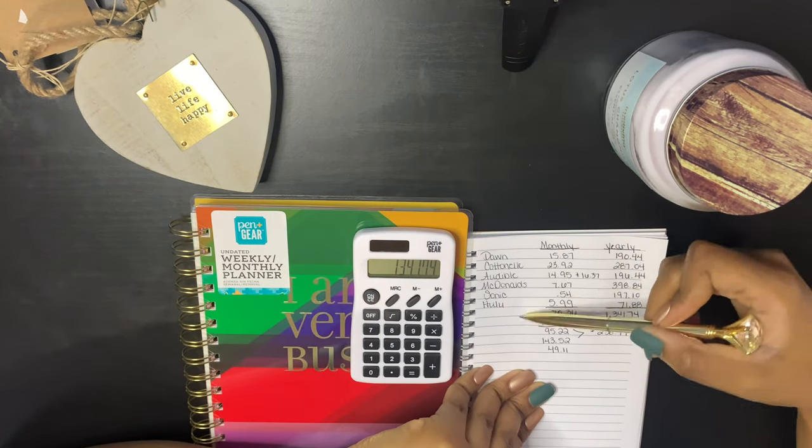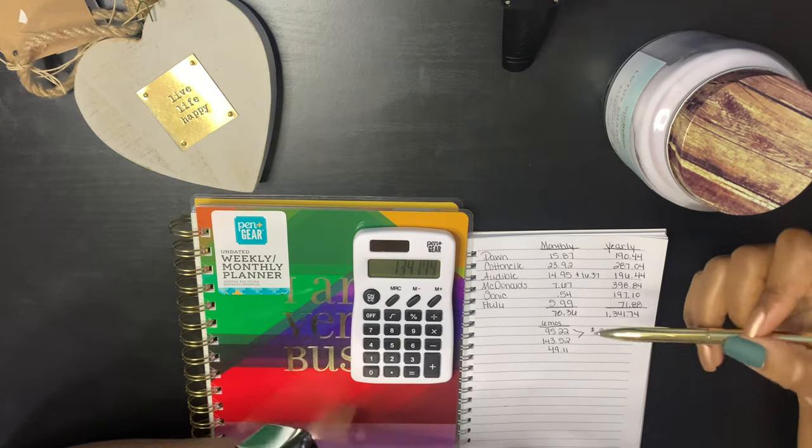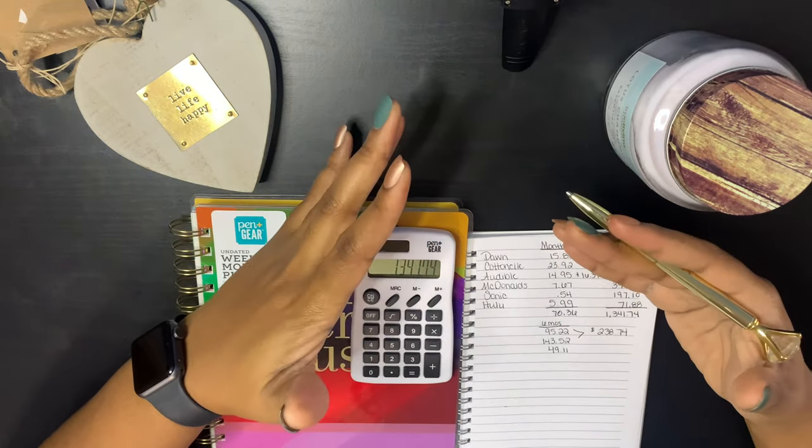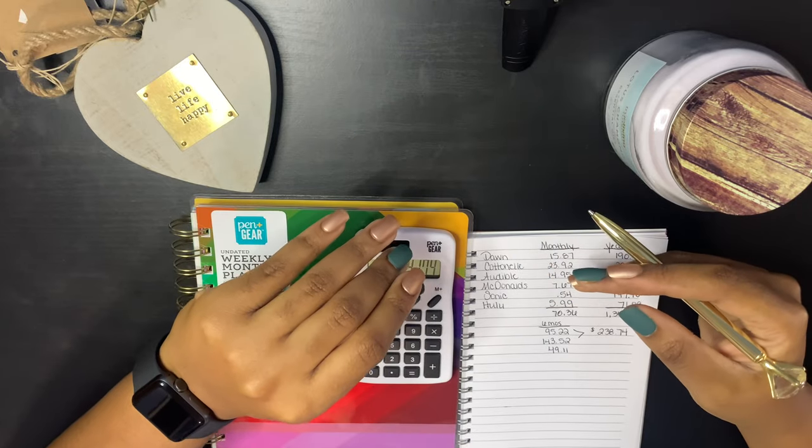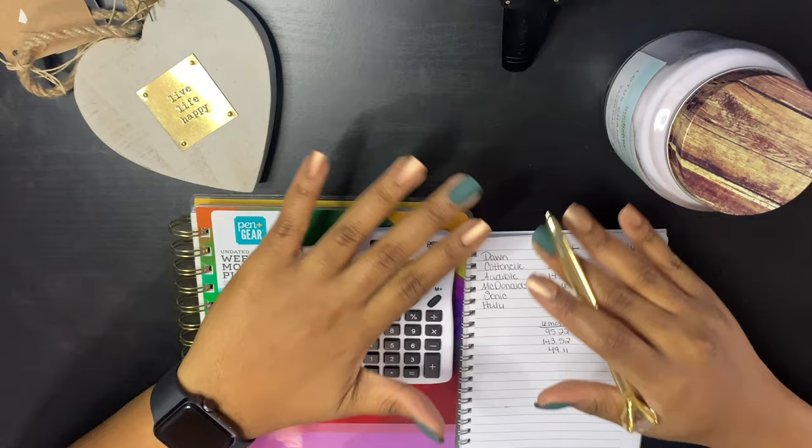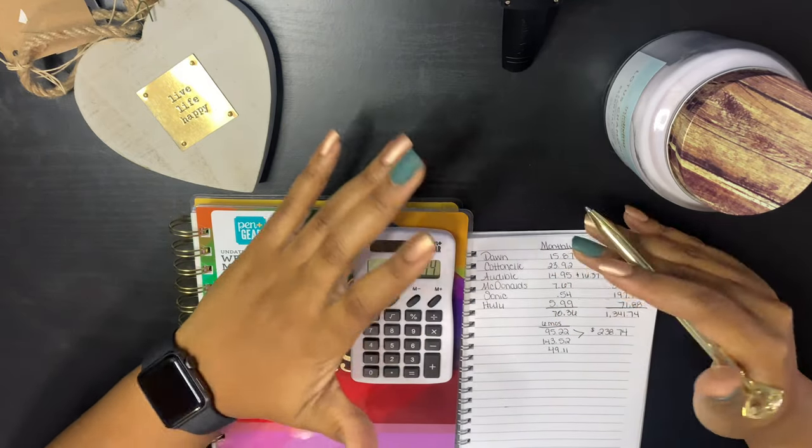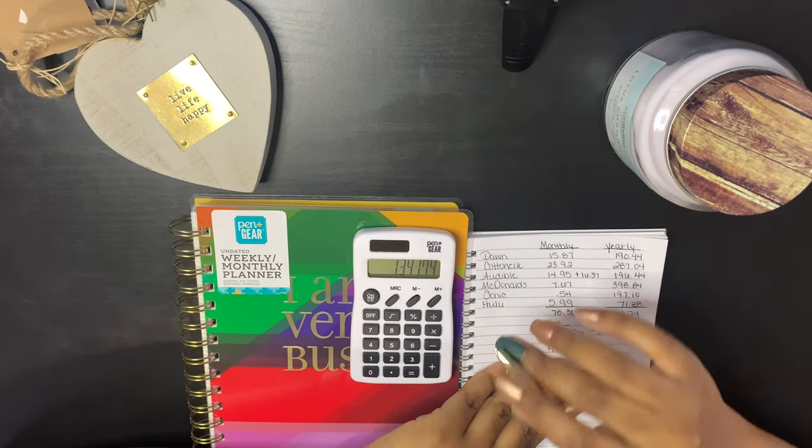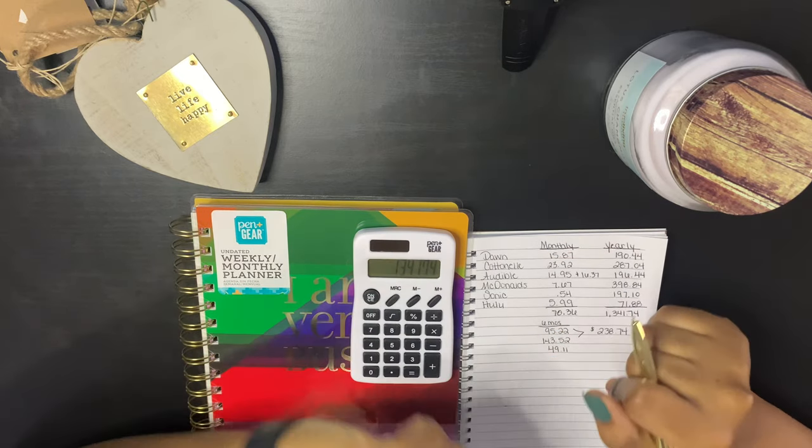None of this is a necessity. Yes I need tissue and you know dishwashing liquid, but I can go to the store and get that. You know I coupon too. But none of this is a necessity. So y'all, we're gonna have to cut some stuff out. We're gonna have to cut something.